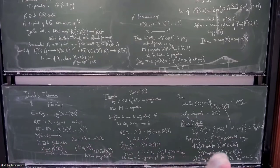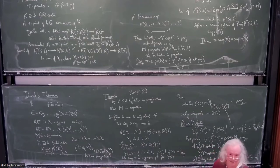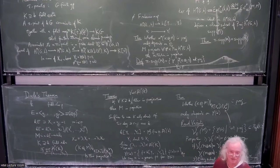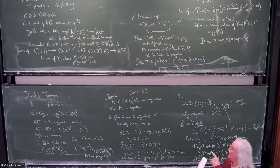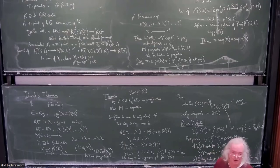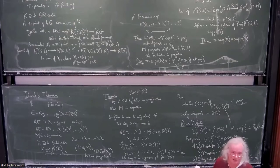For a finitely generated module, the rank variety introduced in the last lecture is just the set of all closed and generic points contained in that closed set — it's a closed subset in the Zariski topology.